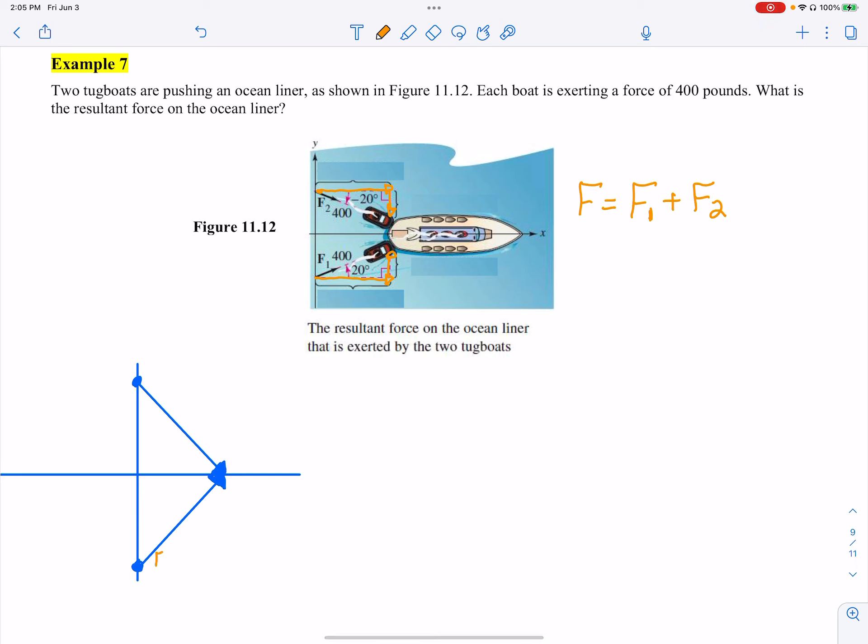So this is F1, and we can consider this as a triangle and break down each force. Now it tells me that each boat is exerting a force of 400. So I know that the magnitude of both of these will be 400. Okay, so if I'm trying to find components here, let's do F1 first. And I'm trying to find just the X component.